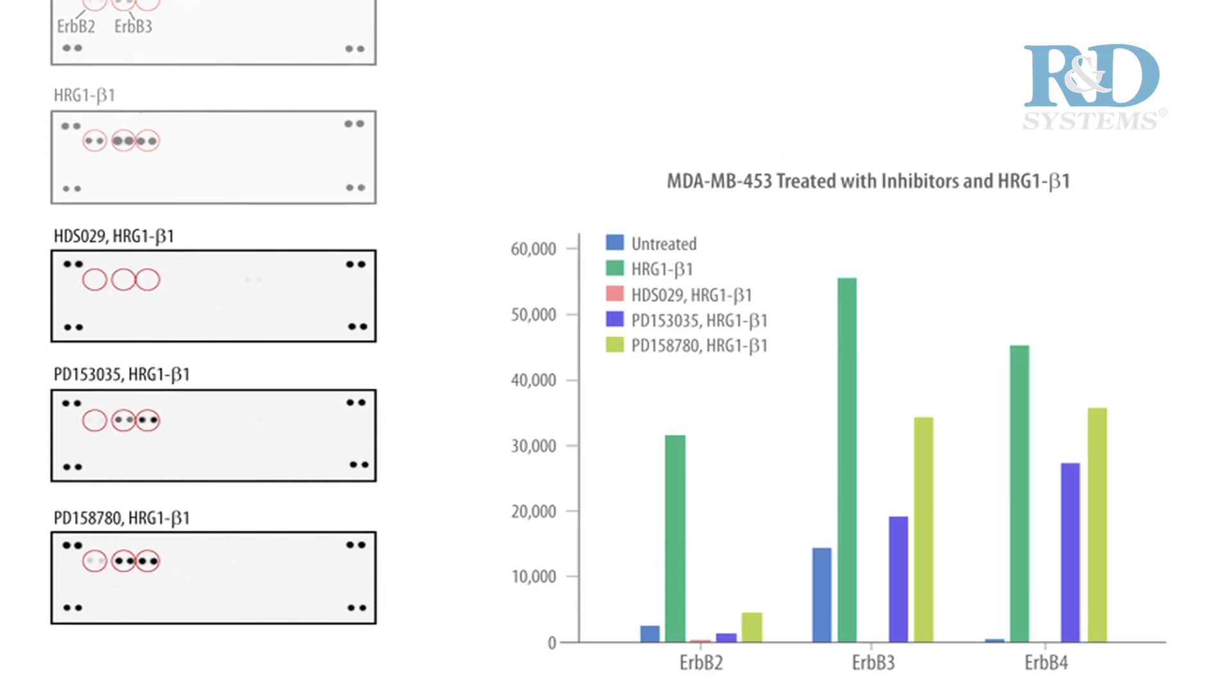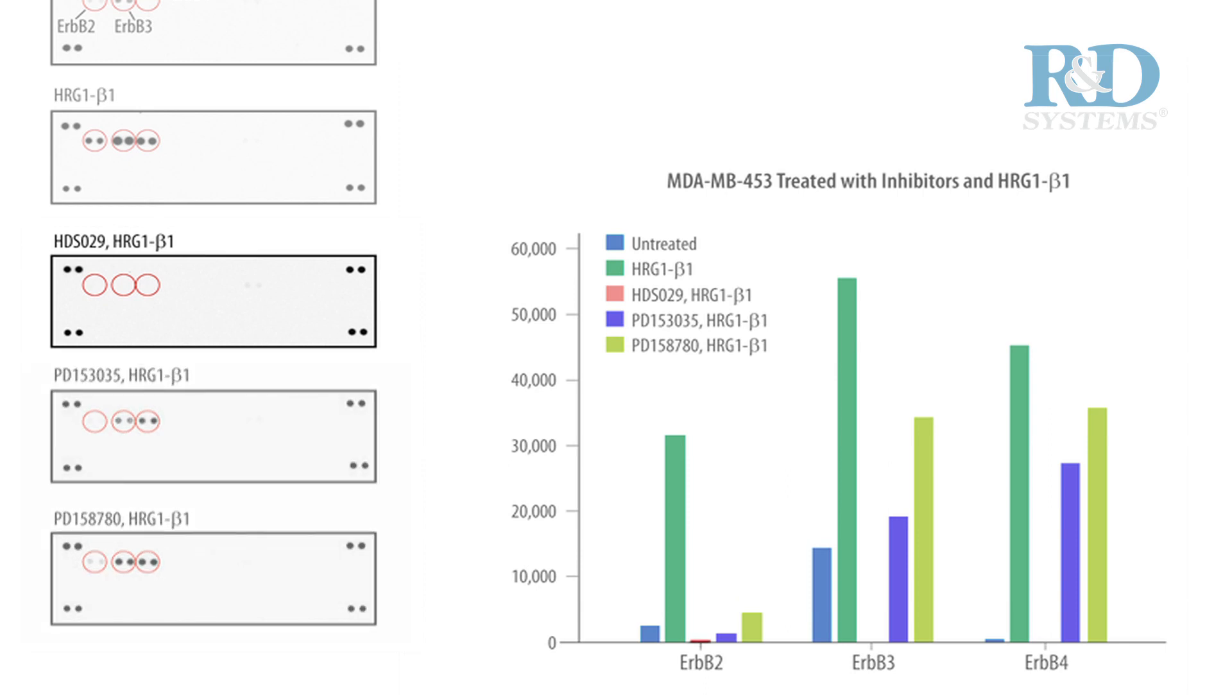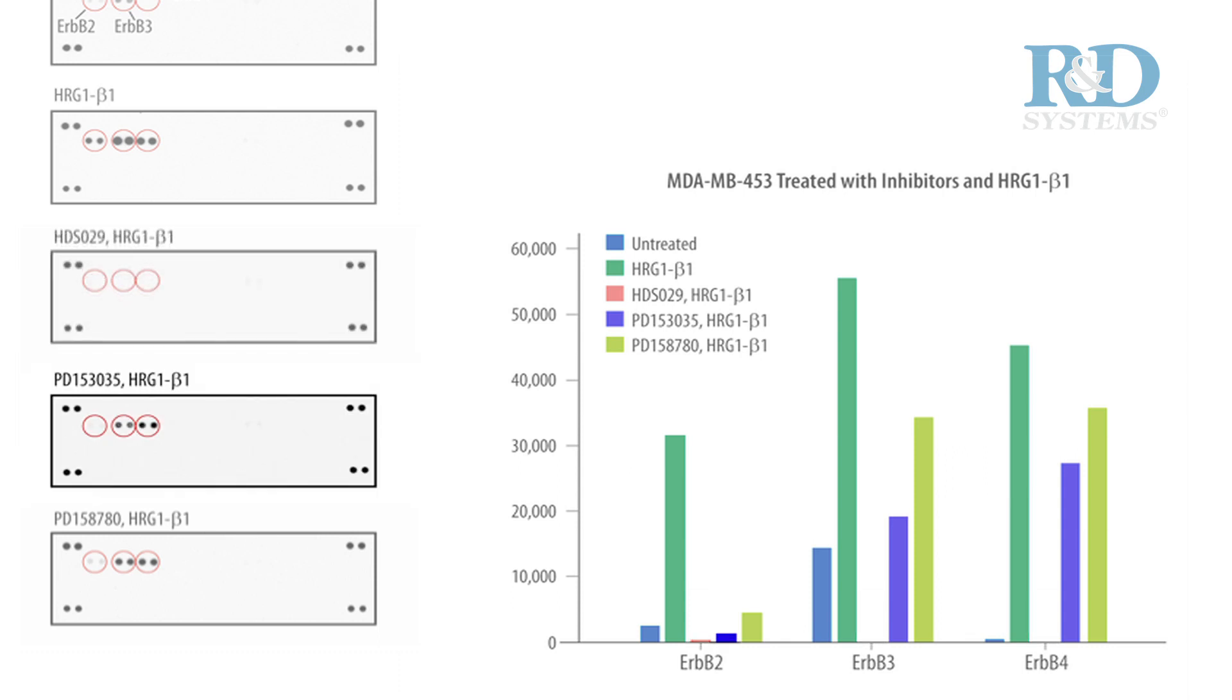Whereas, the treatment of cells with all three ErbB family selective inhibitors prior to HRG beta-1 incubation caused reductions in ErbB2, ErbB3, and ErbB4 phosphorylation.